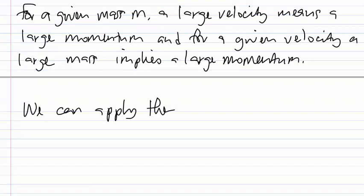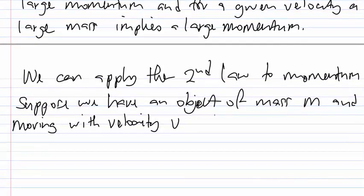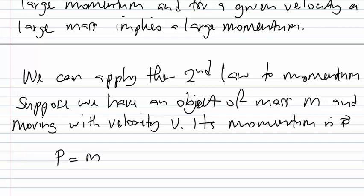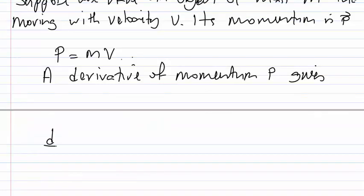We can apply Newton's second law to momentum. Suppose we have an object of mass M moving with velocity V. Its momentum is P = mv. If we take the derivative of momentum, d/dt of P equals d/dt of mv.